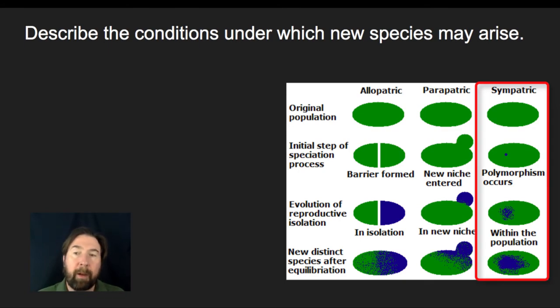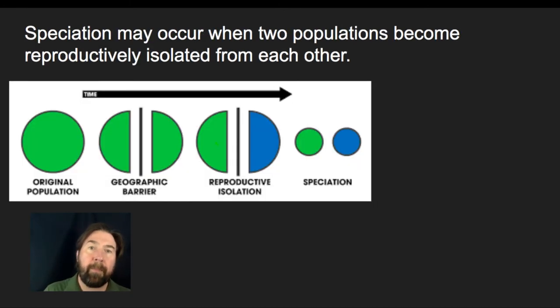And even though there's no physical barrier, they're going to lead to two populations representing that same environment. And so that's our sympatric speciation. Now, when we talk about the speciation that may occur when two populations become reproductively isolated, we often think about it as a geographic barrier or physical barrier. But as we said, barriers could be any form of blockage from two organisms mating and reproducing.